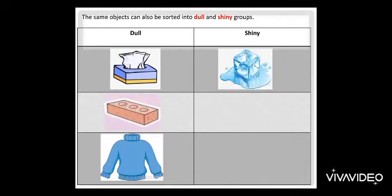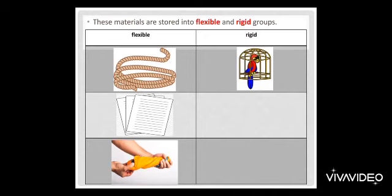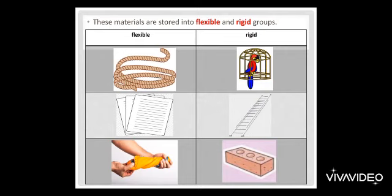These materials are sorted into flexible and rigid. Flexible materials like rope and paper and rubber is flexible too. Rigid like this cage and stairs of iron and brick.